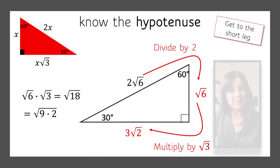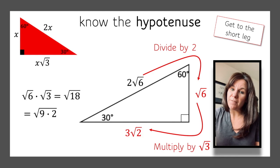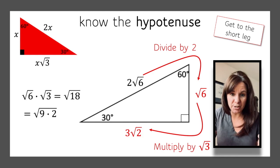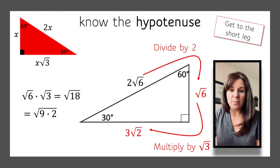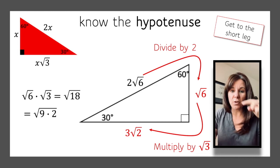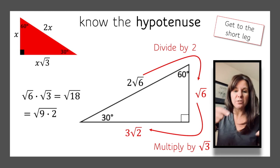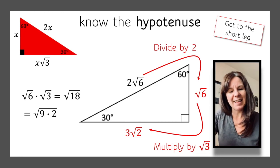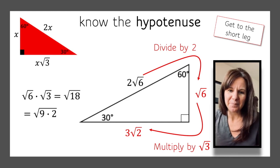So those are special right triangles — the 45-45-90 triangle and the 30-60-90 triangle. It's just a matter of knowing the relationship, so you can go from one side to the hypotenuse to the other side. There's so much you can know. Thanks for being here.